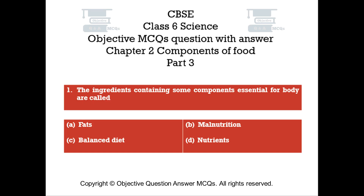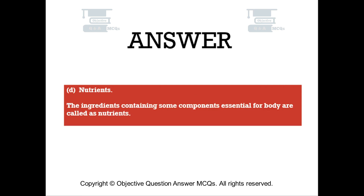Question number 1: The ingredients containing some components essential for body are called. Option A: Fats. Option B: Malnutrition. Option C: Balanced diet. Option D: Nutrients. The right answer is Option D — Nutrients. The ingredients containing some components essential for body are called as nutrients.